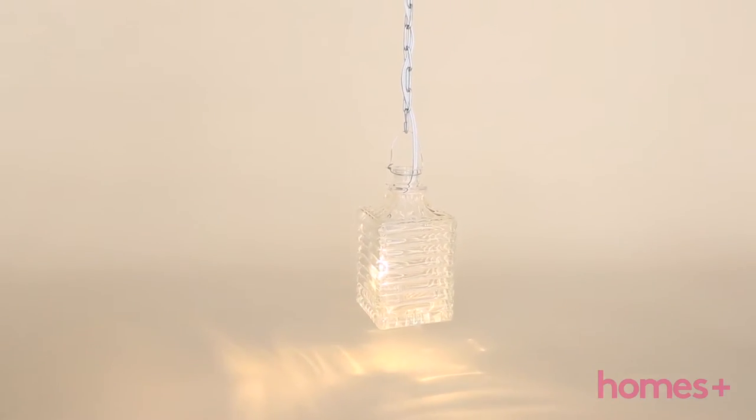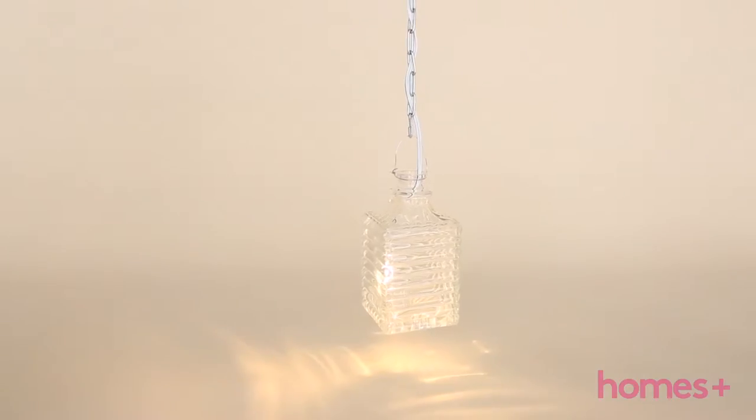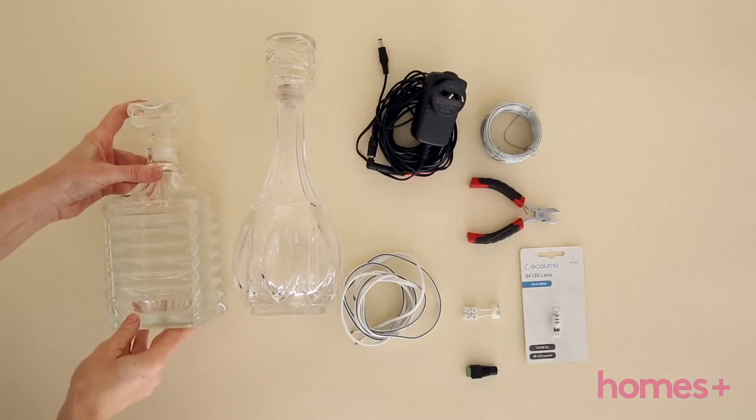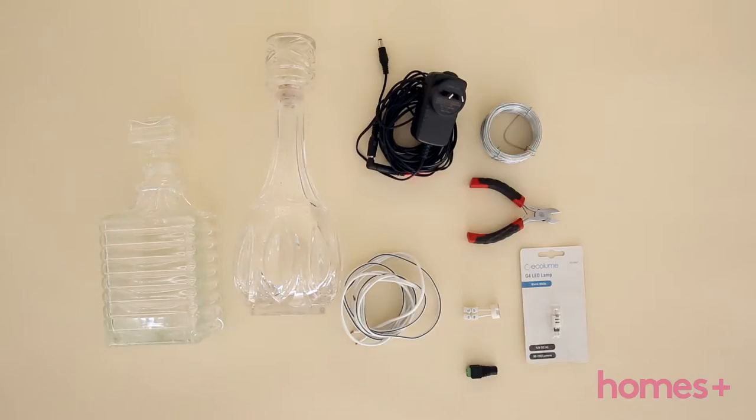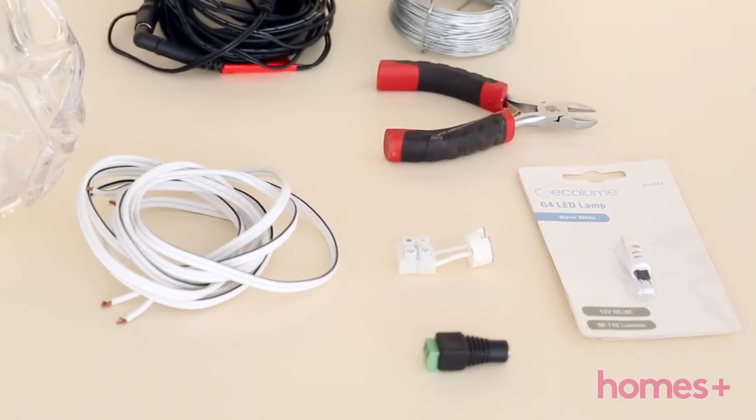Upcycle vintage decanter lights. What you'll need: vintage decanters, J-Cars LED kit, wire, wire cutters, electrical cord and chain.